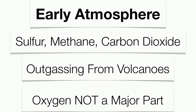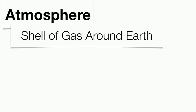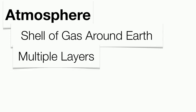Oxygen was not a major part of that early atmosphere, very simply because there was not a large abundance of plants during that time. Our atmosphere today is essential for life to exist — without the atmosphere, there's no oxygen, there's no life on the planet.